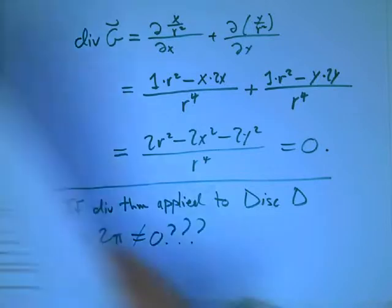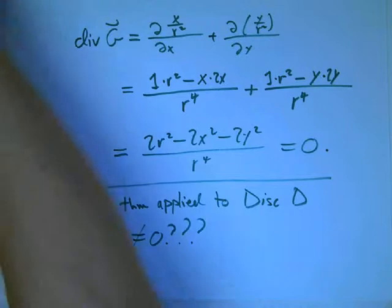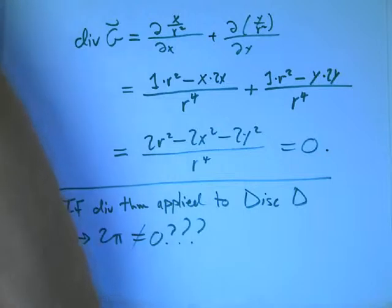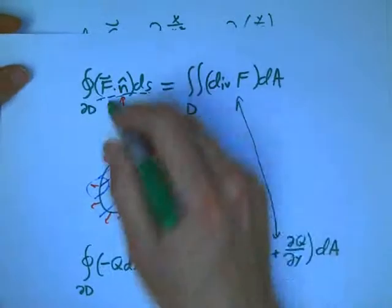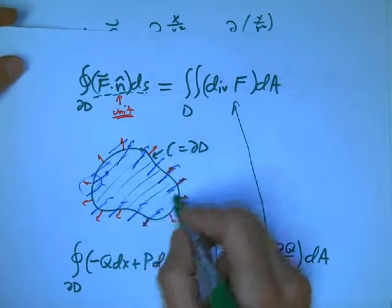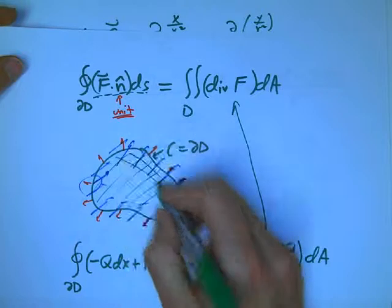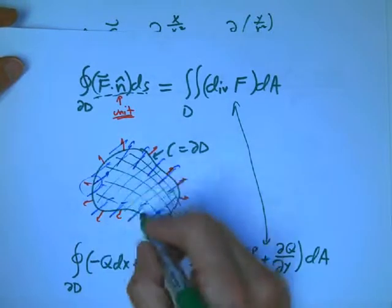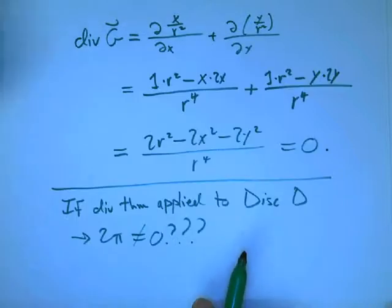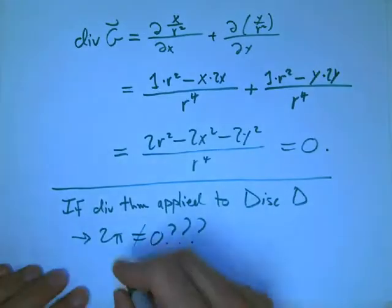And what's going on is, and we've seen this with the vortex vector field in circulation, is that, and I keep wanting to show you that, but it doesn't show up very well. The theorem, this theorem only applies if the vector field is defined and nice, technically means continuously differentiable, all over the interior of this region.